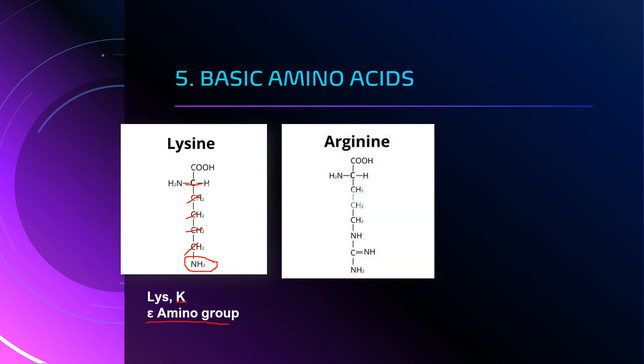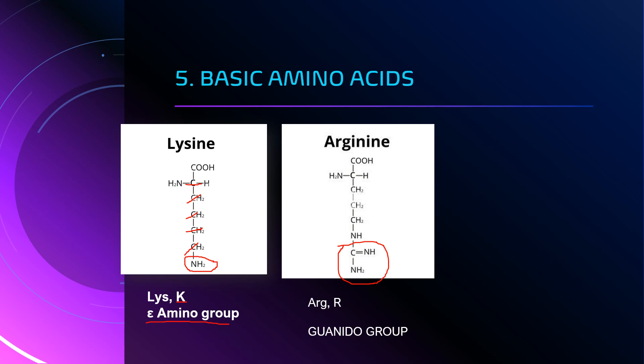The second basic amino acid is arginine. The single-letter code is capital R and the three-letter code is ARG. It has a special guanido group — this is not simply an NH2, but a guanido group attached to the delta carbon via an NH2.